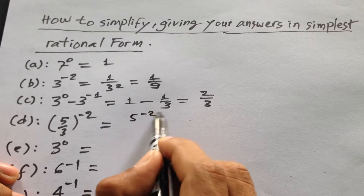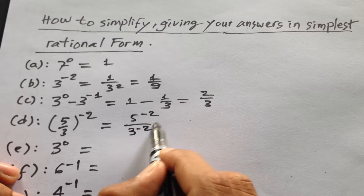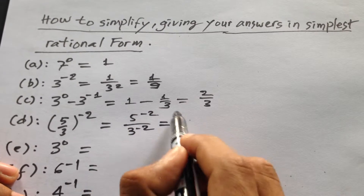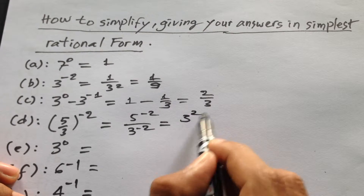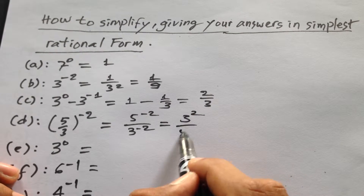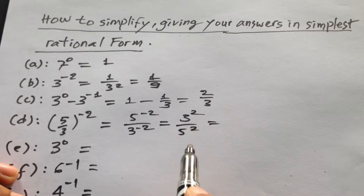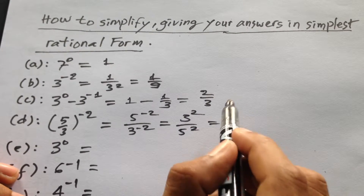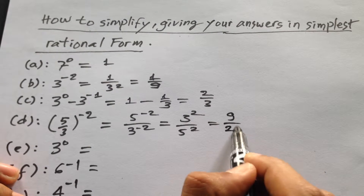It will be 5 to the power 2 over 3 to the power minus 2, and here it will be 3 to the power 2 divided by 5 to the power 2, and then this gives 9 divided by 25.